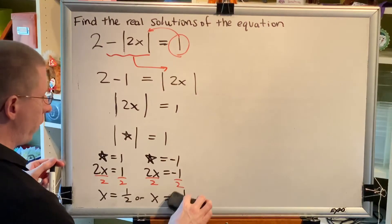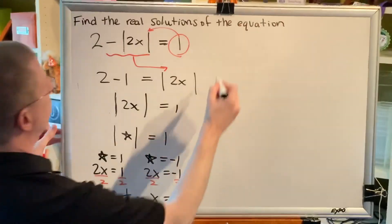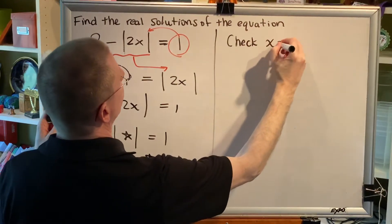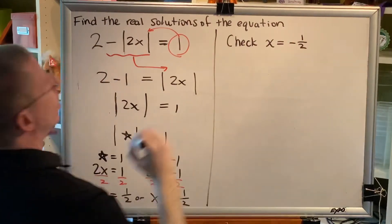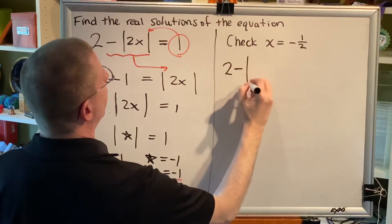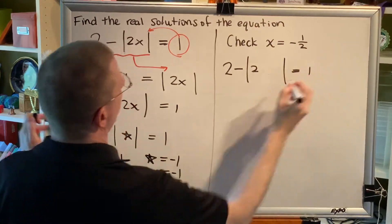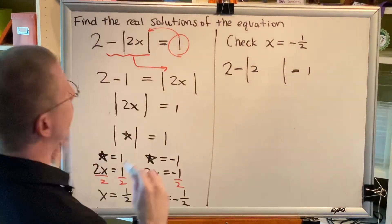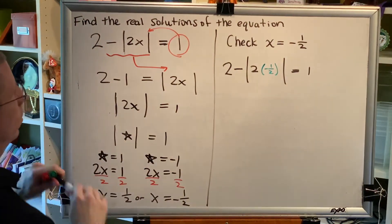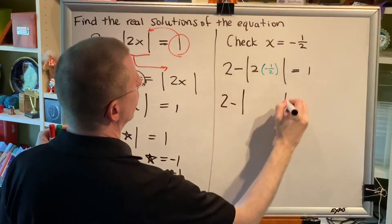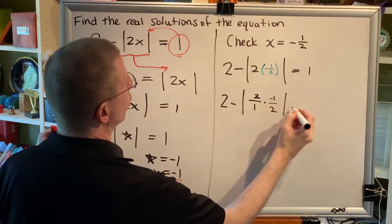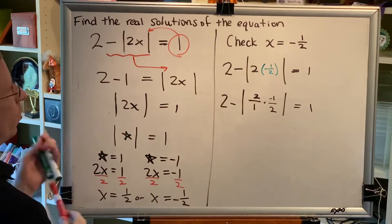Could we check our work for this type of problem? Yes. Let's check one of our solution values — x equals negative 1/2. We could check both, but in the interest of time I'll just check one, since the method is the same. So we take 2 minus the absolute value of 2 times x equals 1, and replace x with negative 1/2.